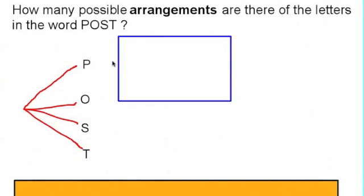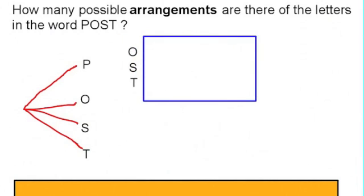Now once you have used the P, you've got a choice of three letters for your second letter. P is followed by O, S or T.